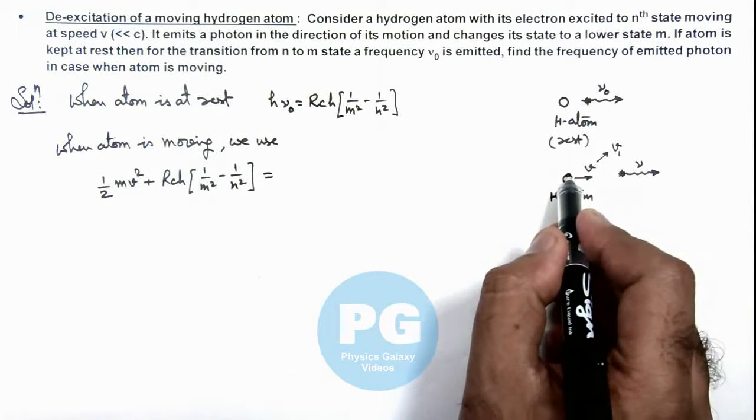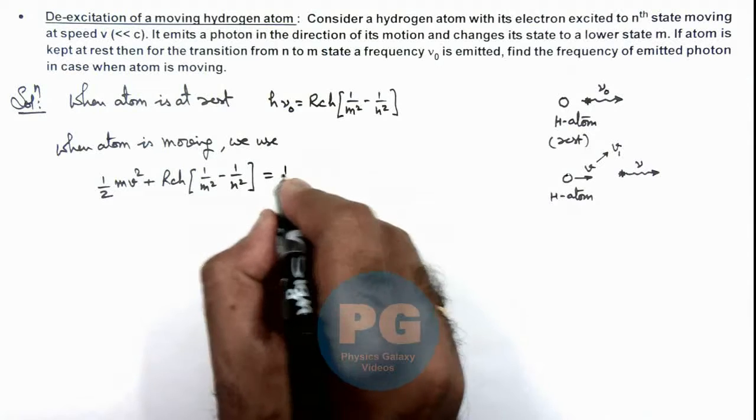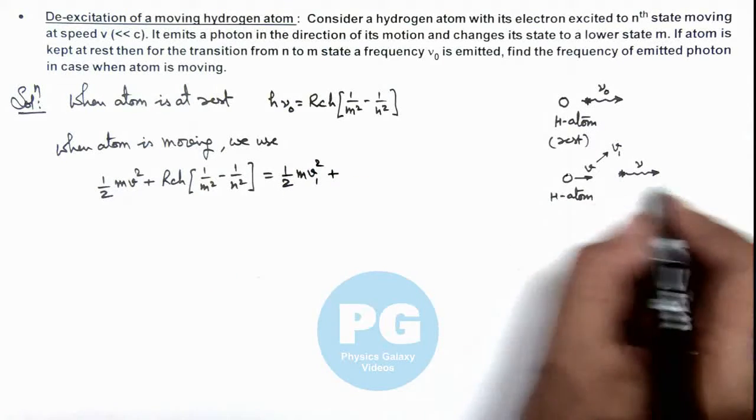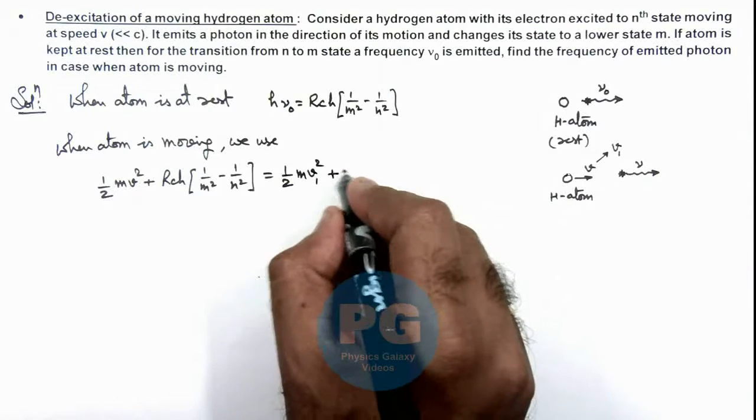Where the remaining energy in the hydrogen atom is (1/2)m*v_1^2, and that which is carried away by the photon is h*nu.